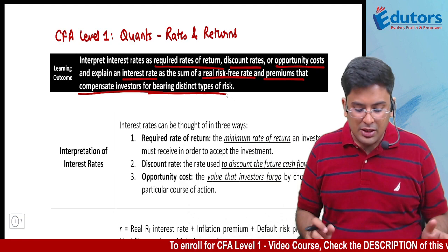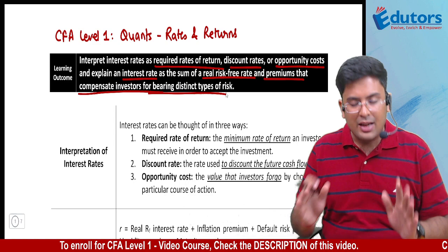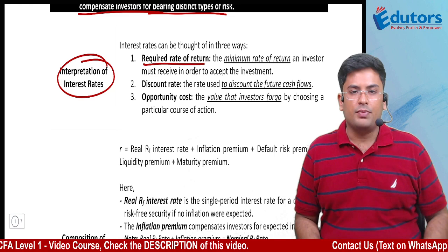But it is quite simple. In the first set we need to understand three terms: the first is required rate of return, second is discount rate, and third is opportunity cost. Let's understand each one by one. Interest rate is typically known by these three names.